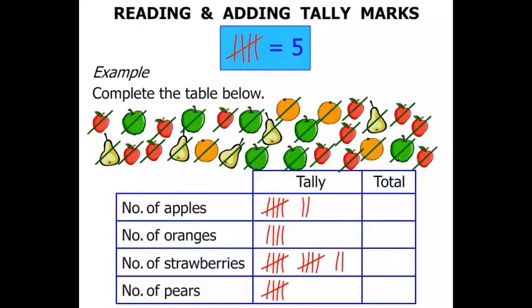We now total them up. So the number of apples. There is a five and a two. That is seven. Number of oranges. Simply four. Number of strawberries. Well what have we got? We have got two fives. That is ten. And two more makes twelve. And finally the number of pears. Simply five. Excellent.